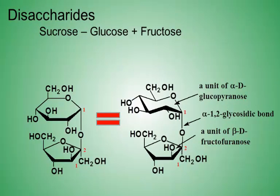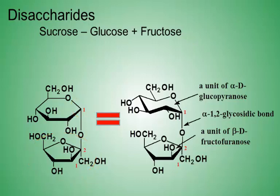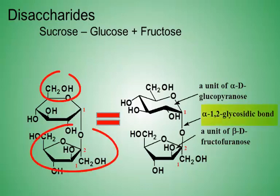The two structures on the screen are equivalent. The one on the right is typically drawn in organic chemistry. Here, the anomeric carbon of the glucose played an active role in bonding to the fructose, so the glycosidic bond is relative to the glucose. In this case, it's an alpha glycosidic bond.